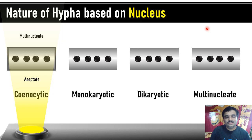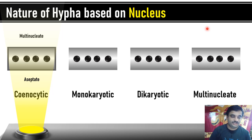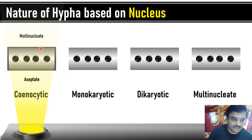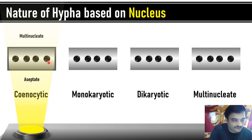We can also study the nature of hyphae based on the nucleus. The number of nuclei present in a single hypha or single compartment and its genetic makeup will help us categorize the nature of hyphae. The coenocytic condition is the first one, where a fungal hypha is not septate — it is aseptate — but at the same time it is composed of many nuclei. More than two nuclei are present in the fungal hypha, and then it is called the coenocytic, multi-nucleated condition.